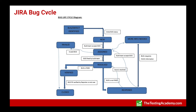In the 'Assigned' state, the developer can do three things: if it's a valid bug, it goes to the 'Open' or 'To Be Fixed' state. If it's an invalid bug, it goes to a 'Rejected' state — for example, if the developer was not able to reproduce the bug. Another possibility is that it's a 'Duplicate' bug, and it gets marked as such. It can also go to a 'Deferred' state if it is not high priority in the current sprint.